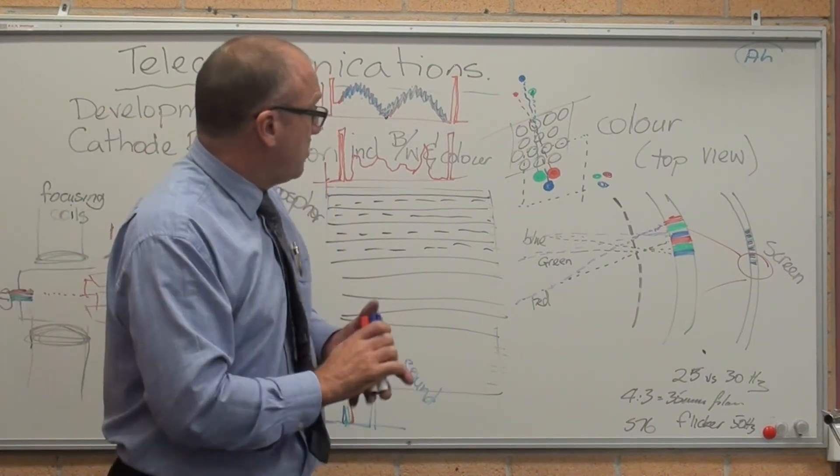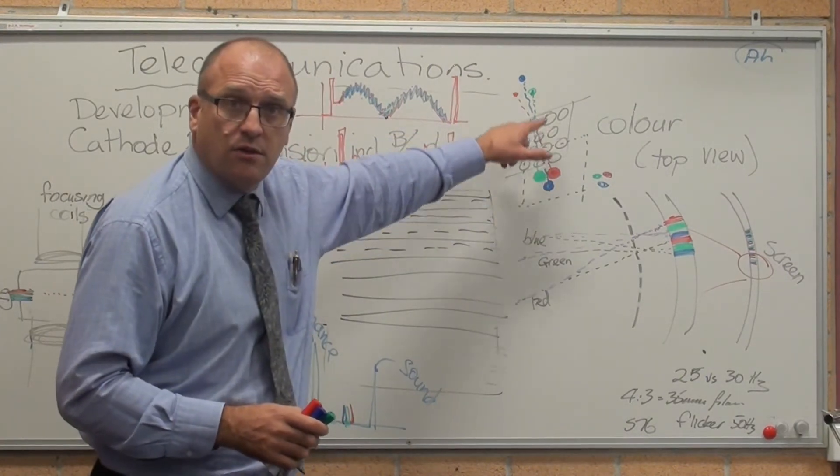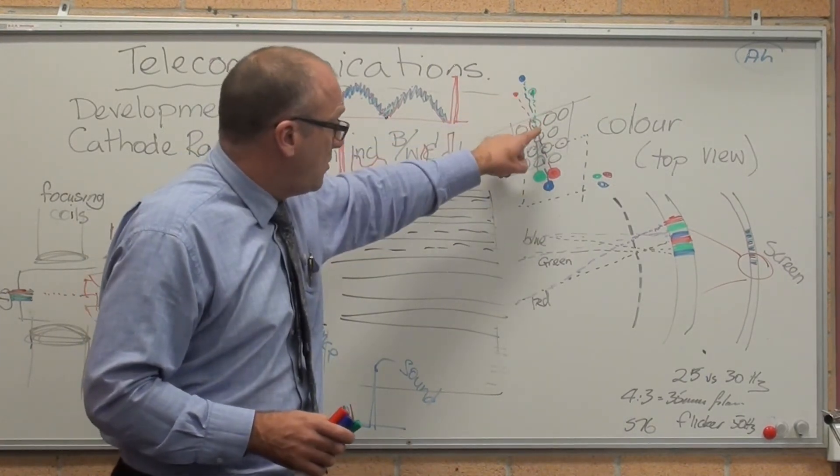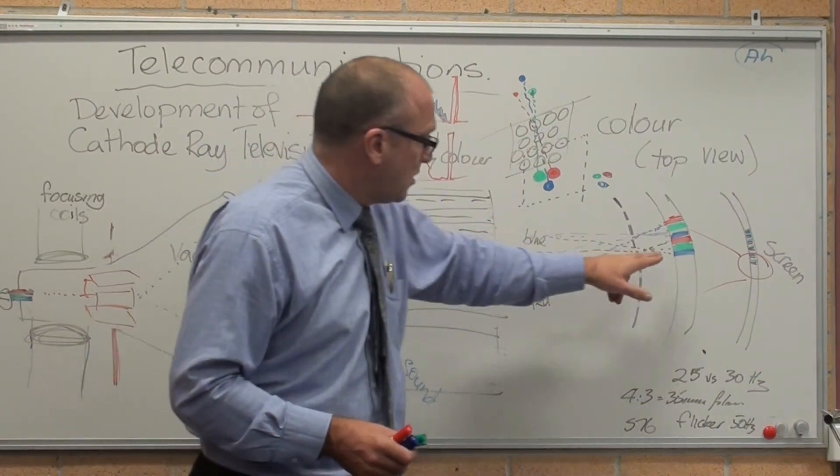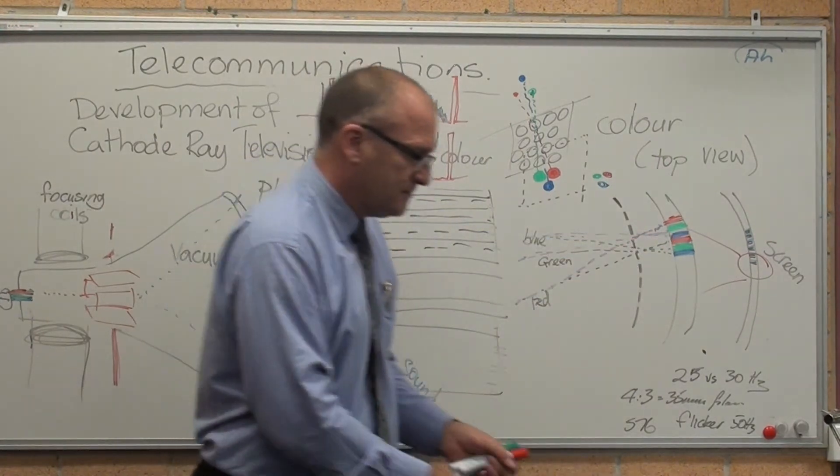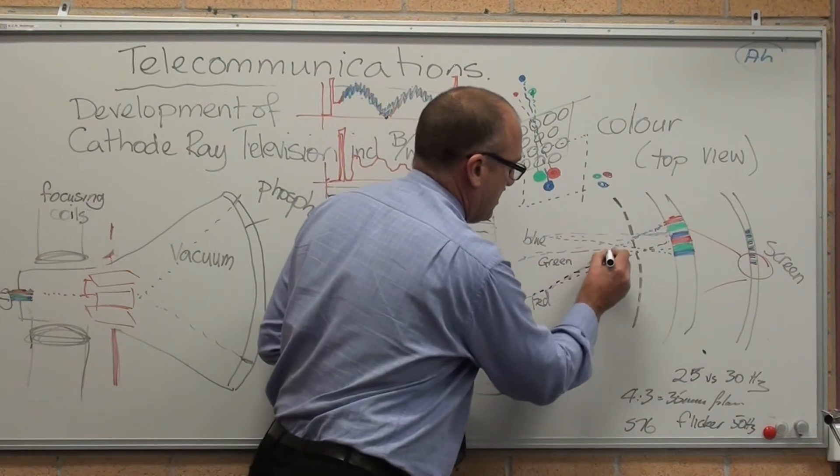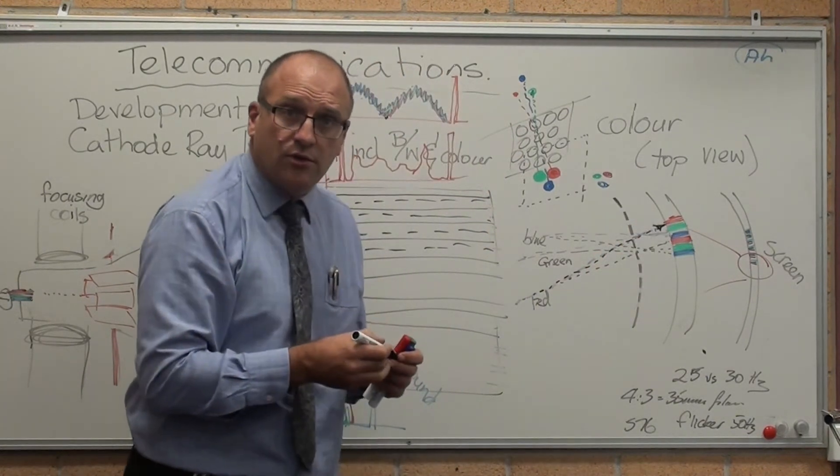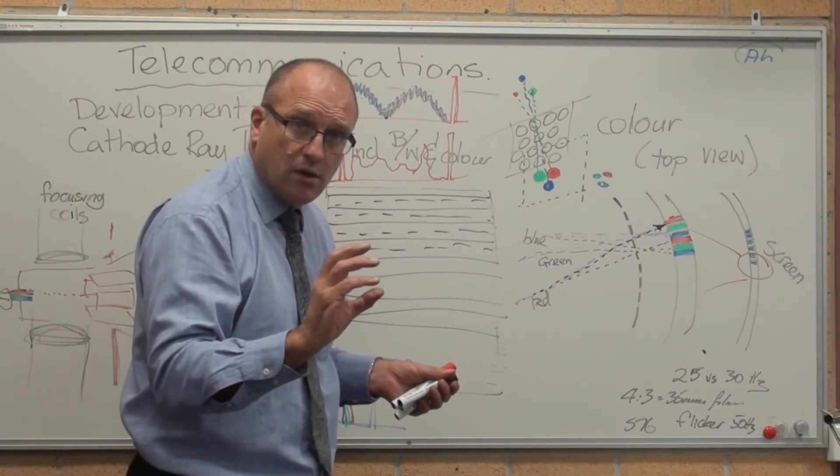So the red electron beam went through a red mask and only hit the red dot. The green electron beam only went through the same hole in the mask, only hit the green dot, or a line, like so. So red only hits red. That's how colour television worked.